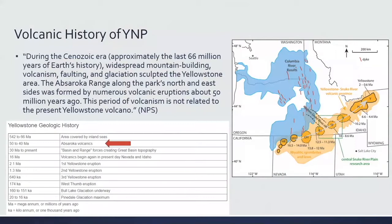The origin of Montana agates is from near the Yellowstone National Park area. According to the National Park Service, during the Cenozoic Era — approximately the last 66 million years — widespread mountain building, volcanism, faulting, and glaciation sculpted the Yellowstone area. The Absaroka Range along the park's north and east sides was formed by volcanic eruptions about 50 million years ago. This volcanism is not related to the present Yellowstone volcano, and it is this older volcanism that hosts the rock in which the agates formed. The Absaroka volcanics are about 40–50 million years old, while the first Yellowstone eruption wasn't until about 2 million years ago.